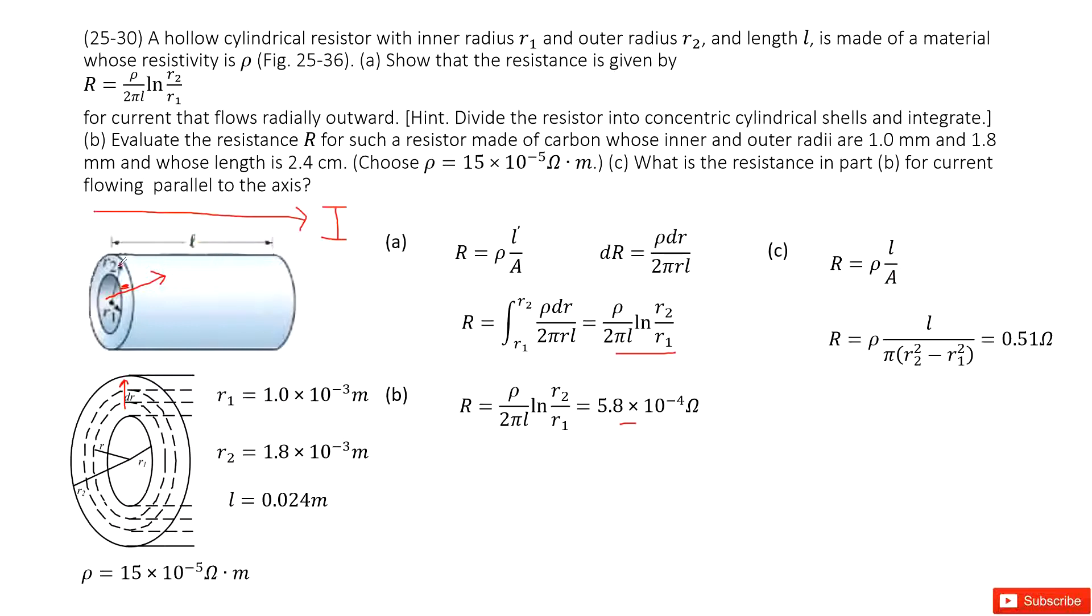A is the cross-sectional area for this cylindrical shell. So this is π(R2² - R1²). Input all the given quantities and get the answer. Thank you.